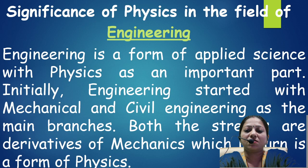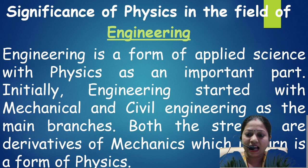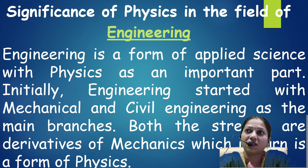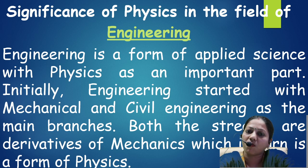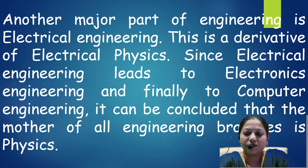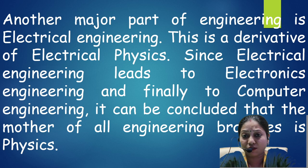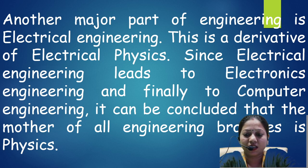We discuss what is the significance of physics in the field of engineering. Engineering is a form of applied science with physics as an important part. Engineering physics is essentially applied physics — the laws and theorems which we can apply in engineering. Initially engineering started with mechanical and civil engineering, both derivatives of mechanics, which in turn is a form of physics. Another major part is electrical engineering, a derivative of electrical physics, which leads to electronics and finally computer engineering. Thus the mother of all engineering branches is physics.